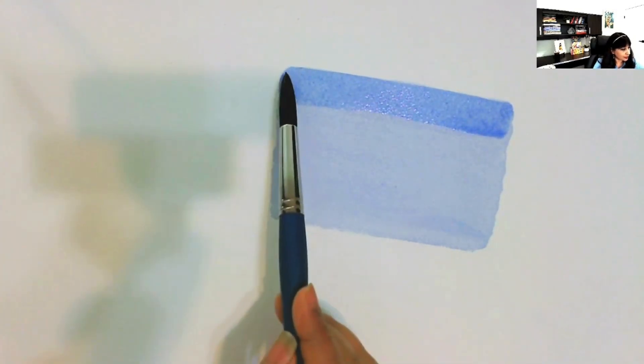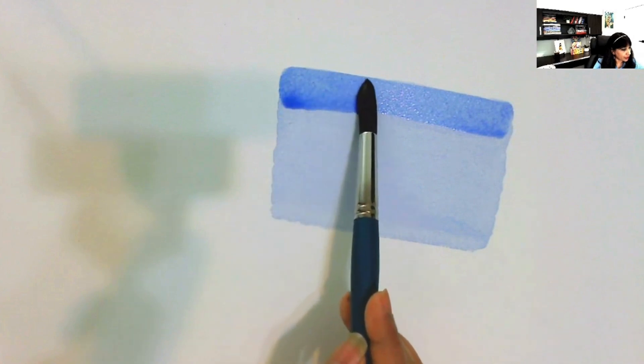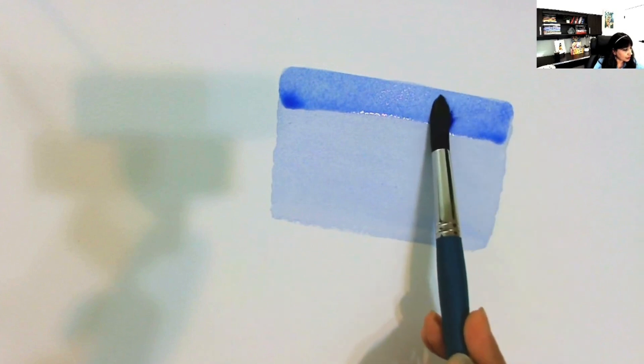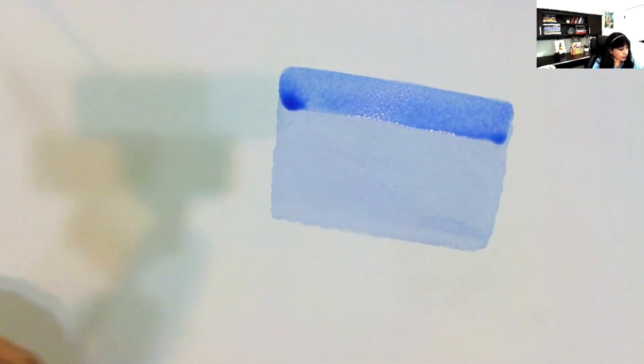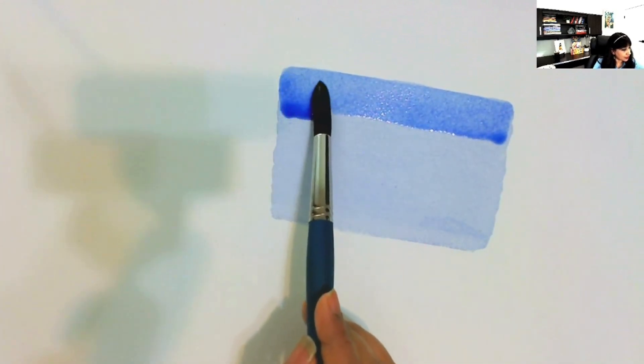Repeating the process so that I'm getting a watercolor bead. That bead formation must be there so that you don't get any brush stroke marks. And now I'm getting a watercolor bead. So I'm just moving slightly down.